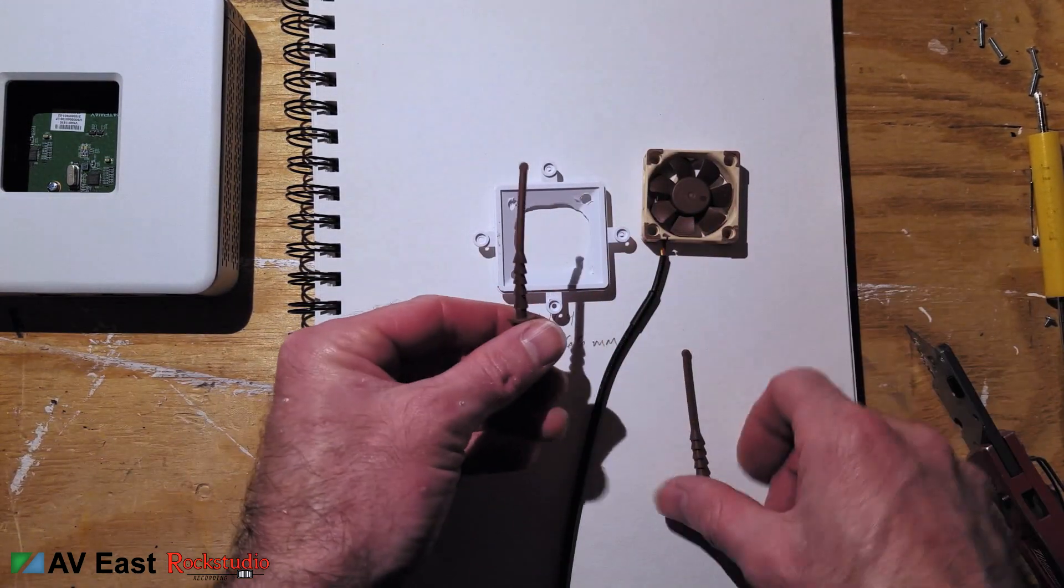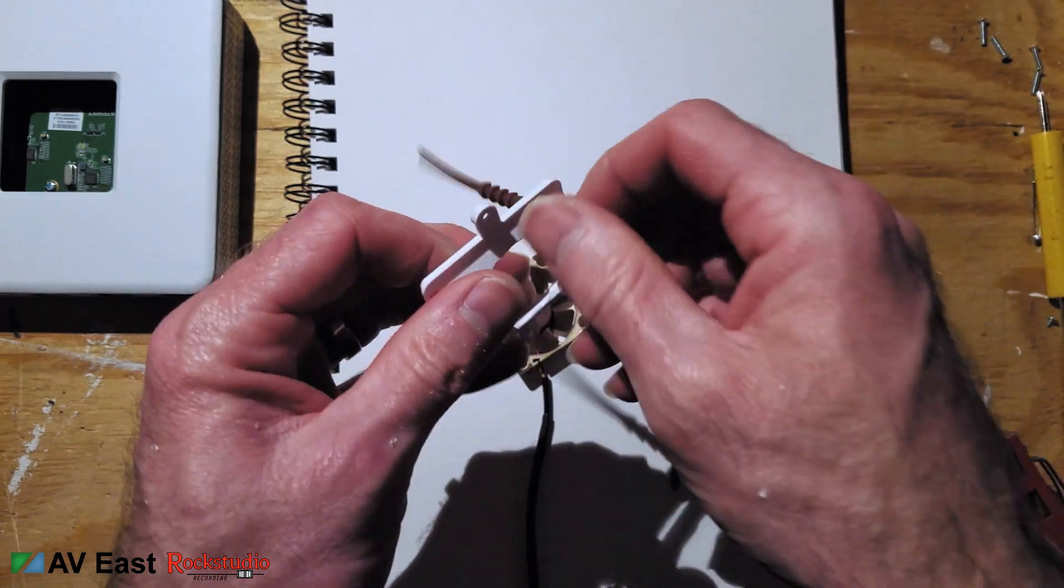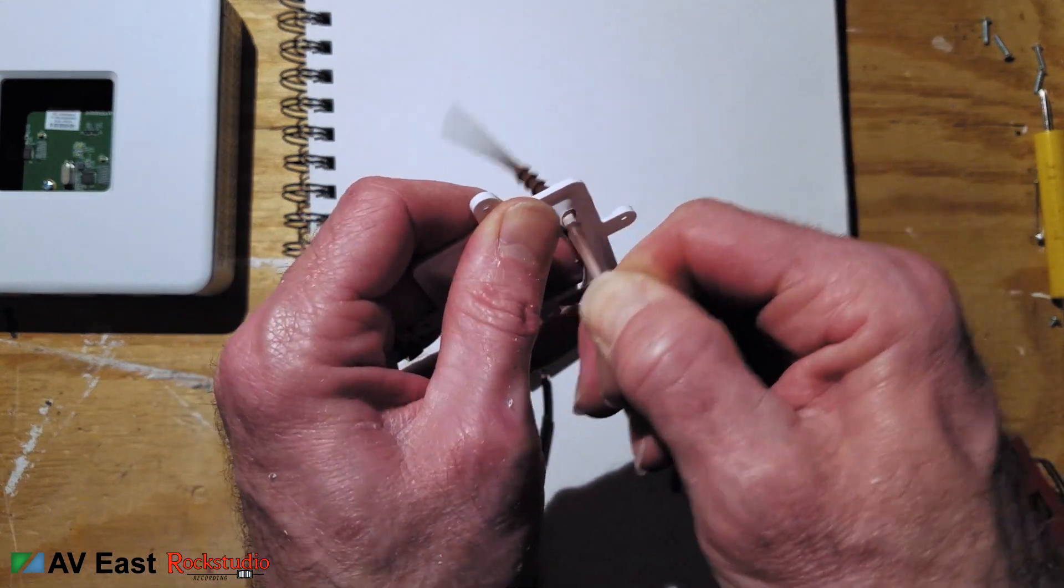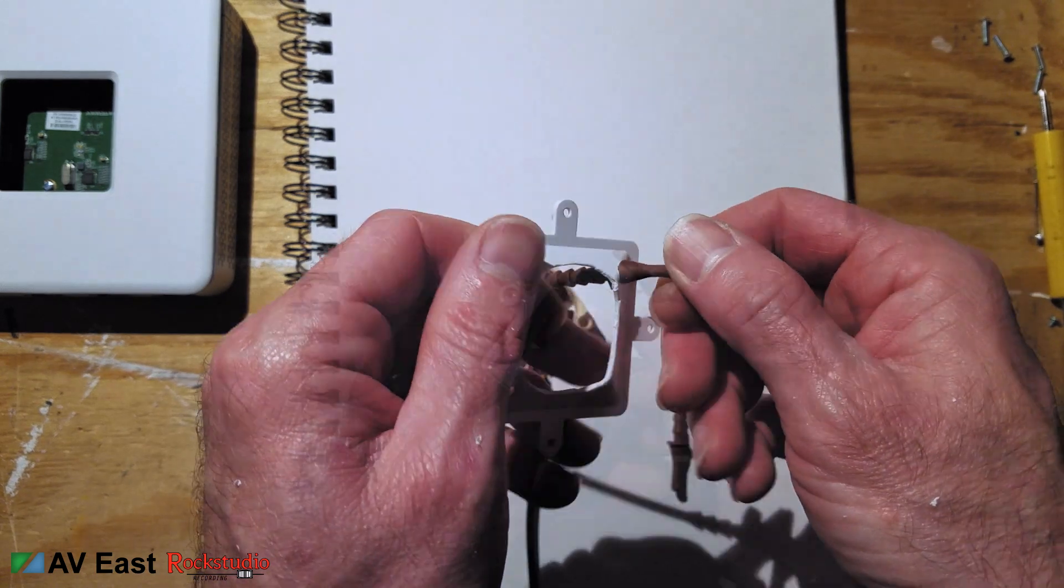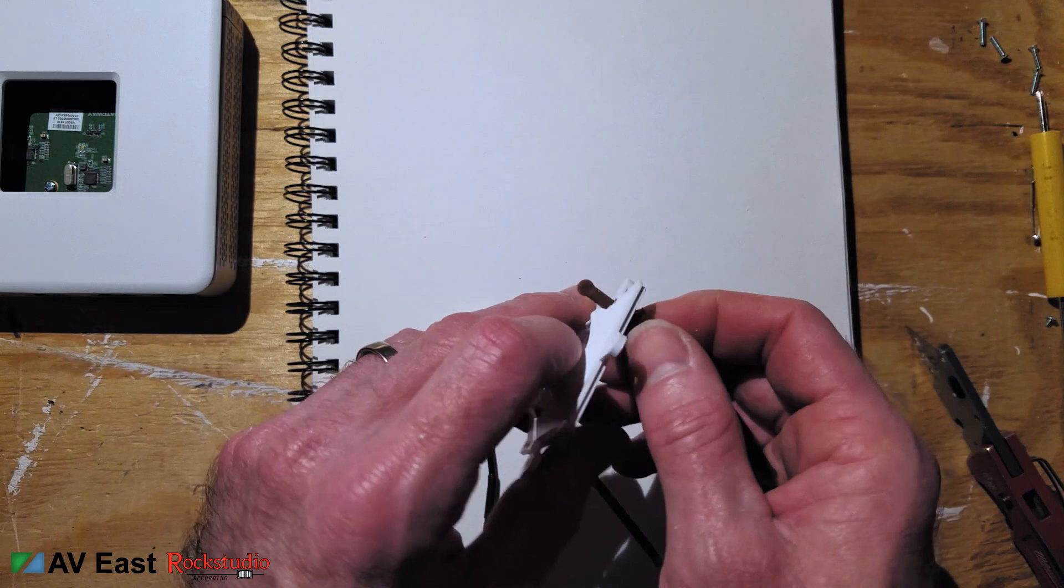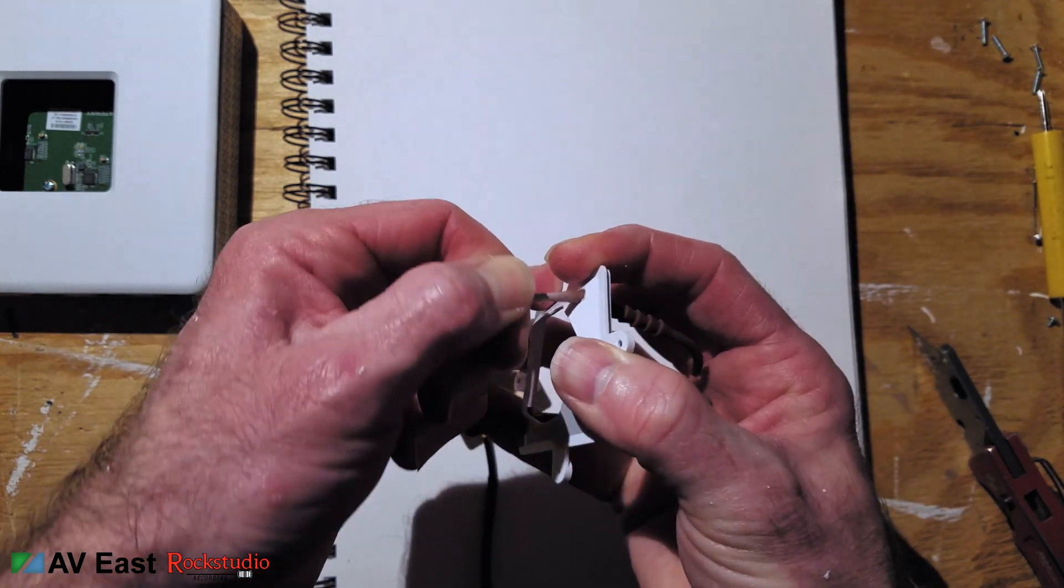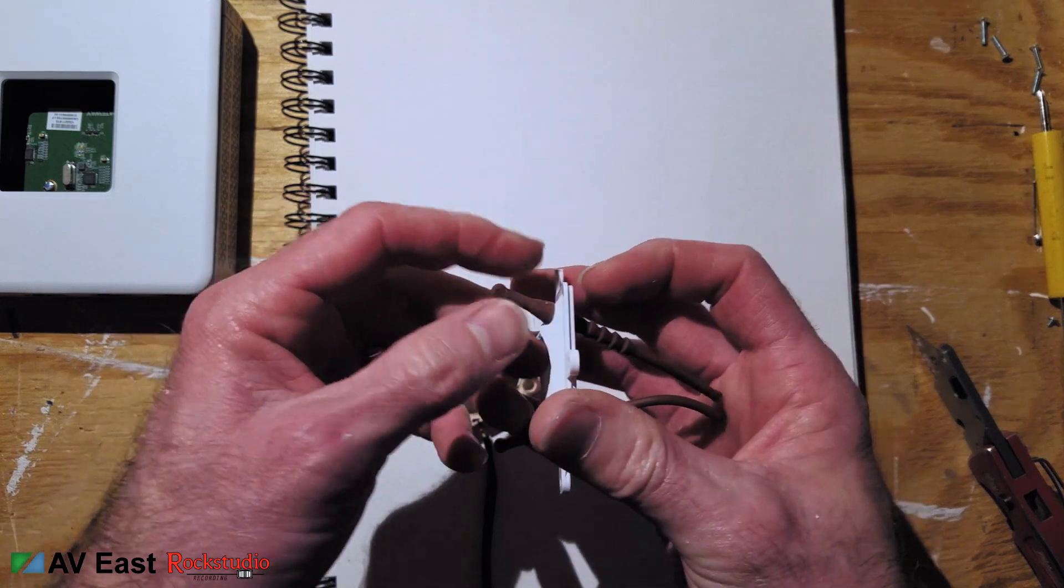Noctua fans come with a really flexible rubber mounting option which is an anti-vibration measure. You can choose to use these if you'd like. I typically try to reduce as much vibration as I can for my clients especially if the server room is going to be near a living space or a working space. Pulling the soft rubber mounts through is extremely satisfying.